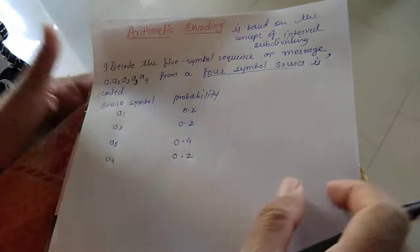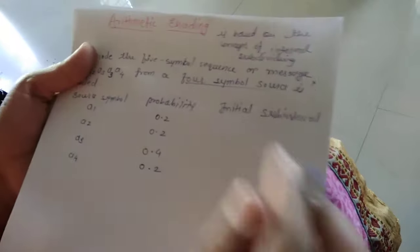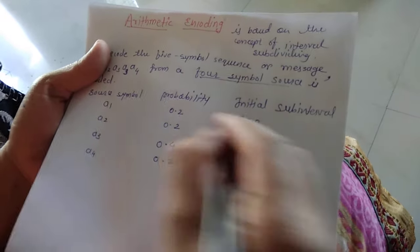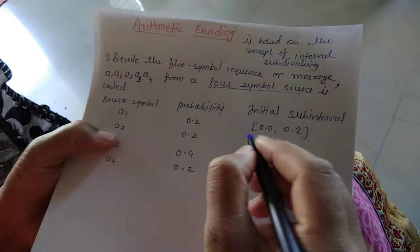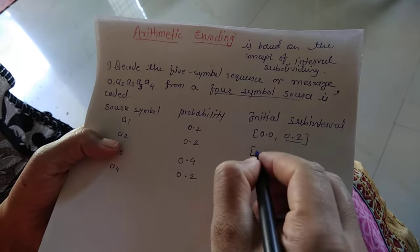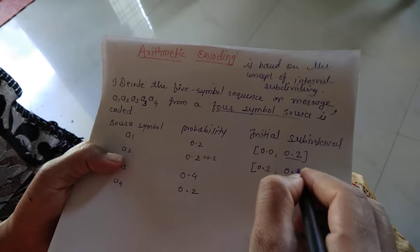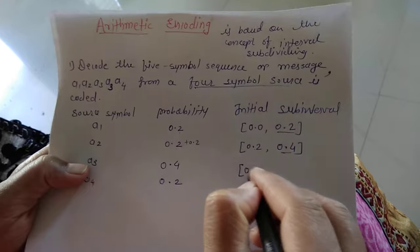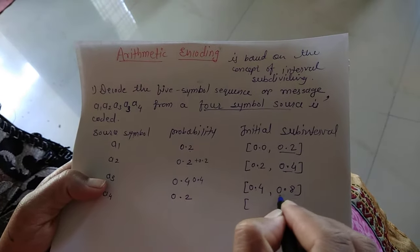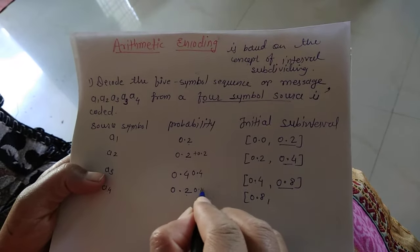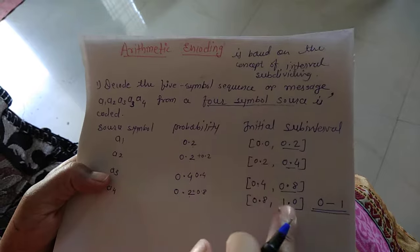First you have to find out the initial sub-intervals. Starting with 0.0, the first probability for the first source symbol is 0.2, so the first interval ends at 0.2. The next interval starts at 0.2 and adds 0.2, giving 0.4. Then 0.4 plus 0.4 gives 0.8, and finally 0.8 plus 0.2 gives 1.0. The probability value is always in the range from 0 to 1.